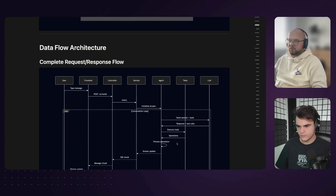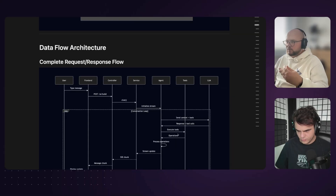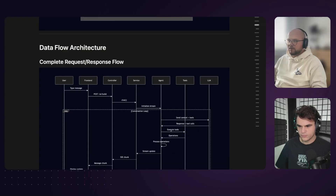The whole loop looks like this: you send it on the front end, it goes to the controller chat service. We send the request to the LLM and the LLM might decide to call a tool, so it goes into this loop. Once the tool executes, we process the output of the tool and stream it back to the client. This goes back and forth until the LLM decides it's finished and ready to send the final message.